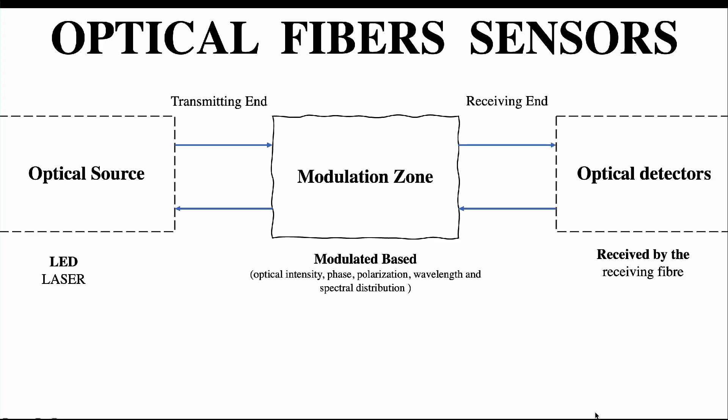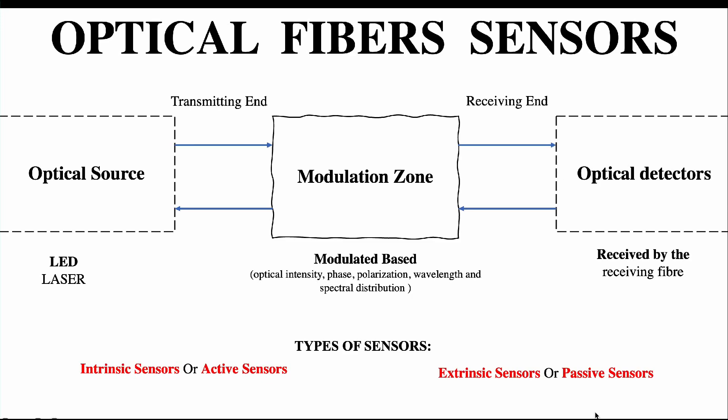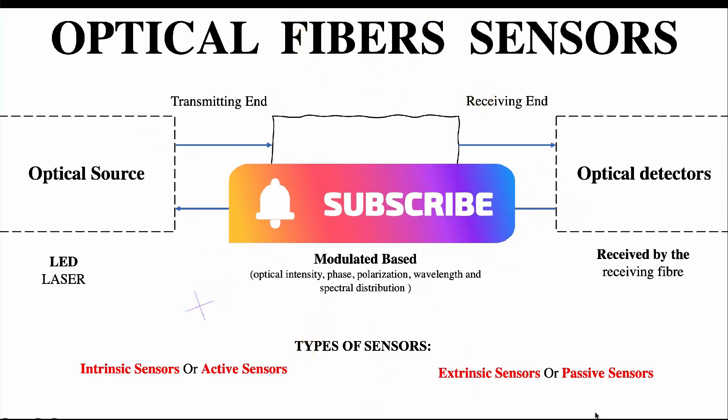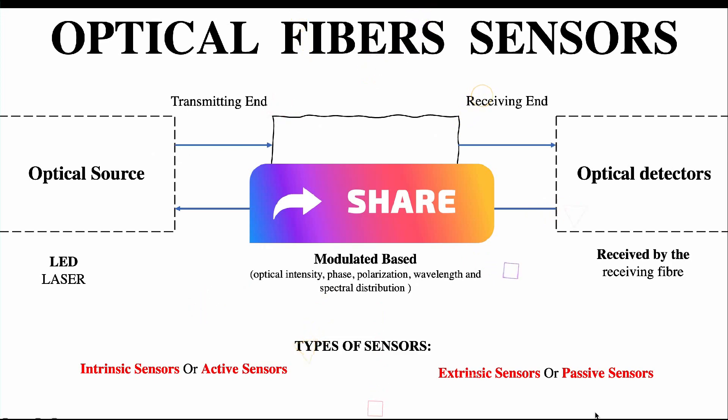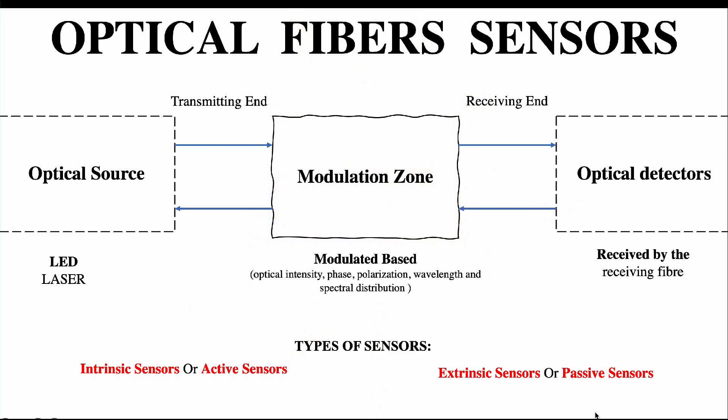Optical fiber sensors are mainly divided into two types: one is intrinsic sensor, and the second one is extrinsic sensor — also called active sensor or passive sensor. In your semester exam, types of sensors may appear as a 4+4 (8 marks) or 3+3 (6 marks) question. The exam may ask you to write the intrinsic sensor construction and working with merits and demerits, or similarly the extrinsic sensors with merits and demerits. So let us see them one by one.